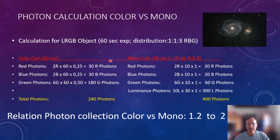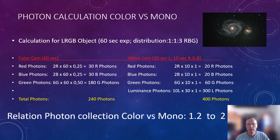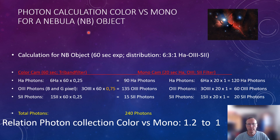In the calculation — 60 seconds, distribution 1:1:3 for R, G, B — the color camera after 60 seconds collected 240 photons. The mono camera collected 400 photons, because 30 seconds went into luminance and 10 seconds each into R, G, and B. So here, the mono camera clearly wins in the theoretical approach for galaxies.